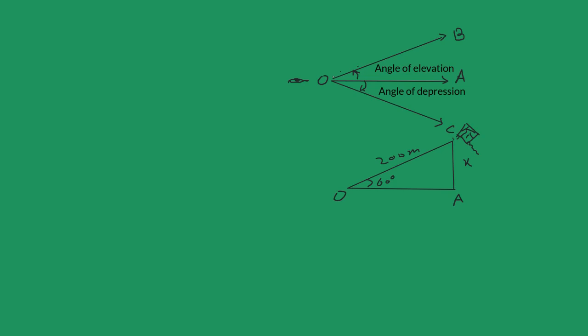In this video, we are going to talk about the angles of elevation and depression. So look at the first diagram. If OA is the horizontal ray, the eye of the observer is at point O. And there are two objects, B and C. Above the horizontal ray OA, we have object B. And below, we have object C.